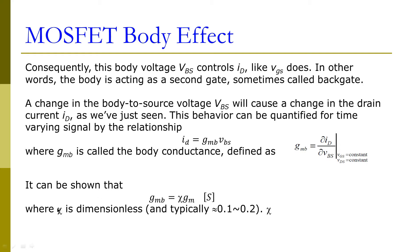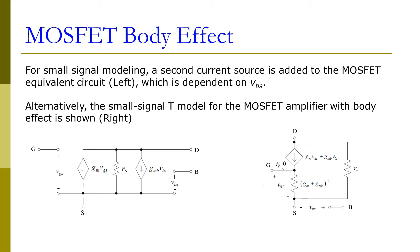It can be shown that this body conductance is proportional to the transconductance of the transistor by a parameter chi. This chi is dimensionless and typically has a value of 0.1 to 0.2. For small signal modeling, a second current source is added to the MOSFET equivalent circuit, dependent on Vbs.